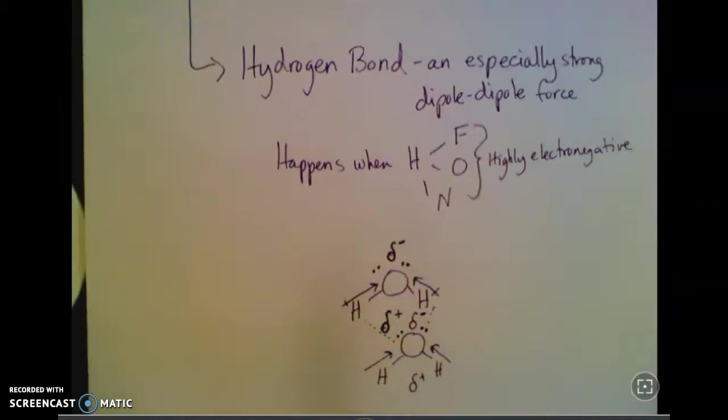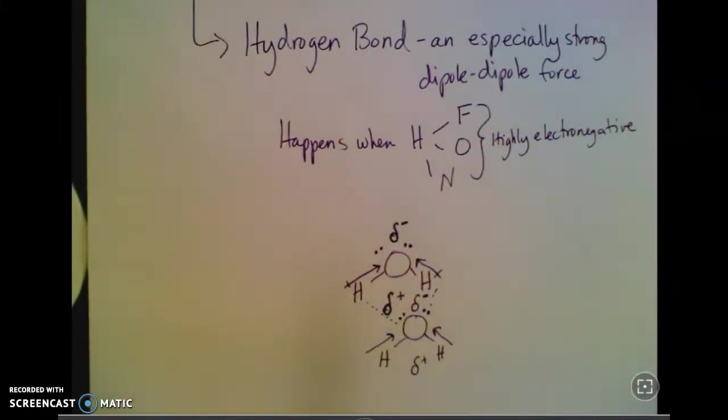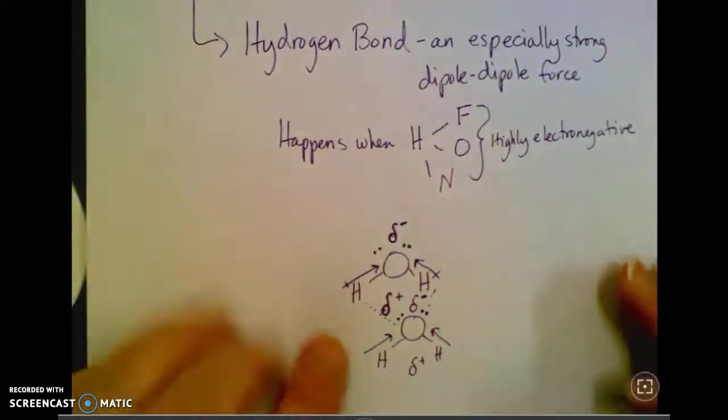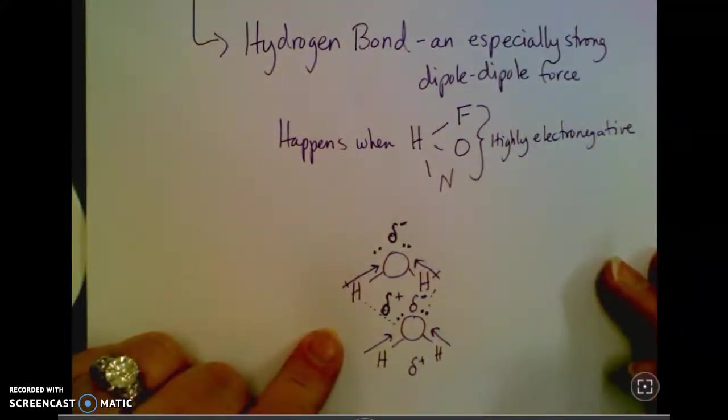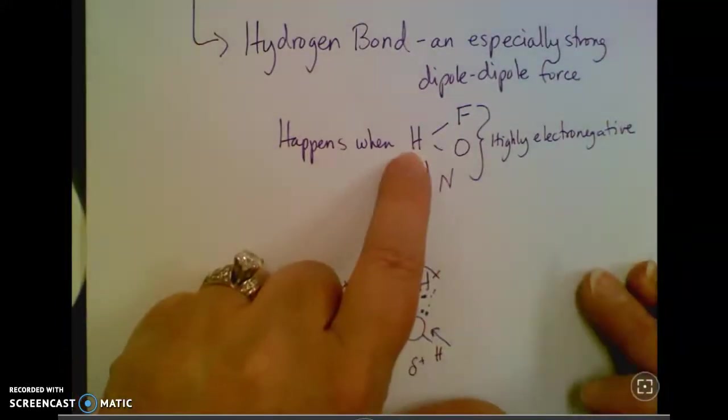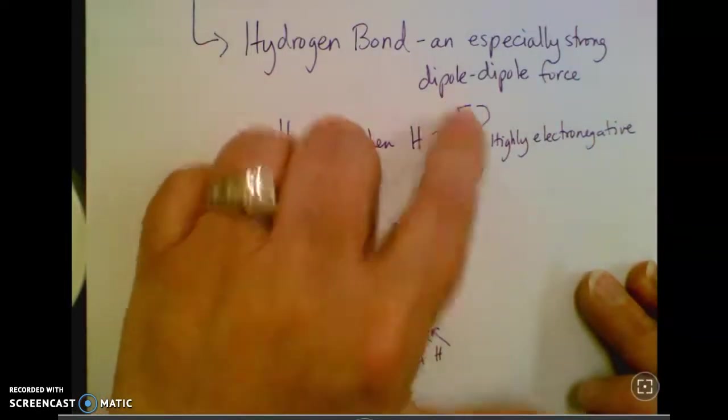They're going to line up this way, since this is the negative end of this molecule and this is the positive end of this one. Sometimes you see little dash lines to show that attraction. But again, a hydrogen bond is no different than any other dipole-dipole force, except that it's just stronger. You're just looking for hydrogen bonded with F, O, or N.